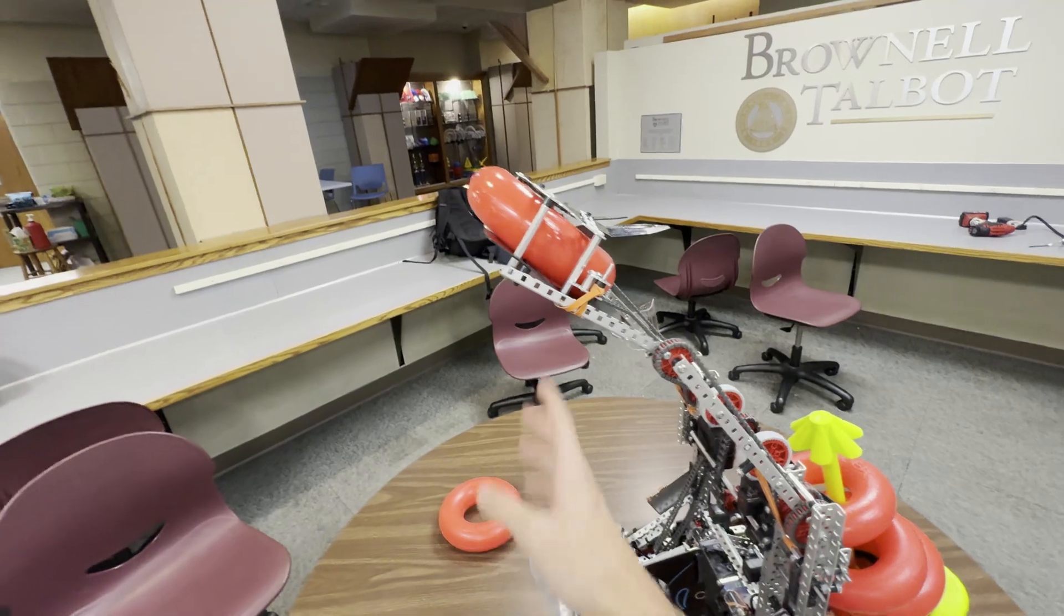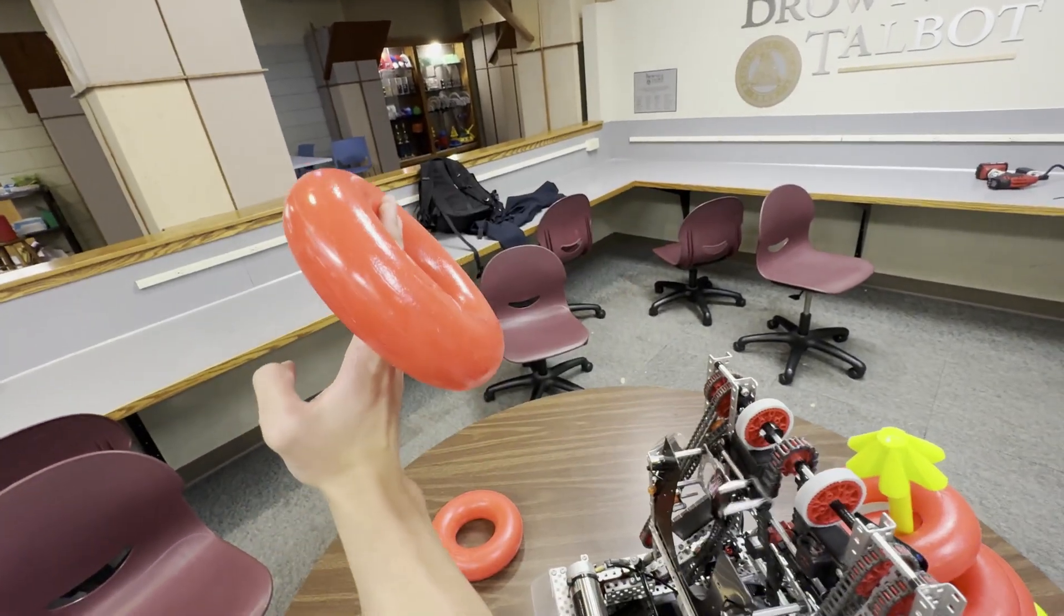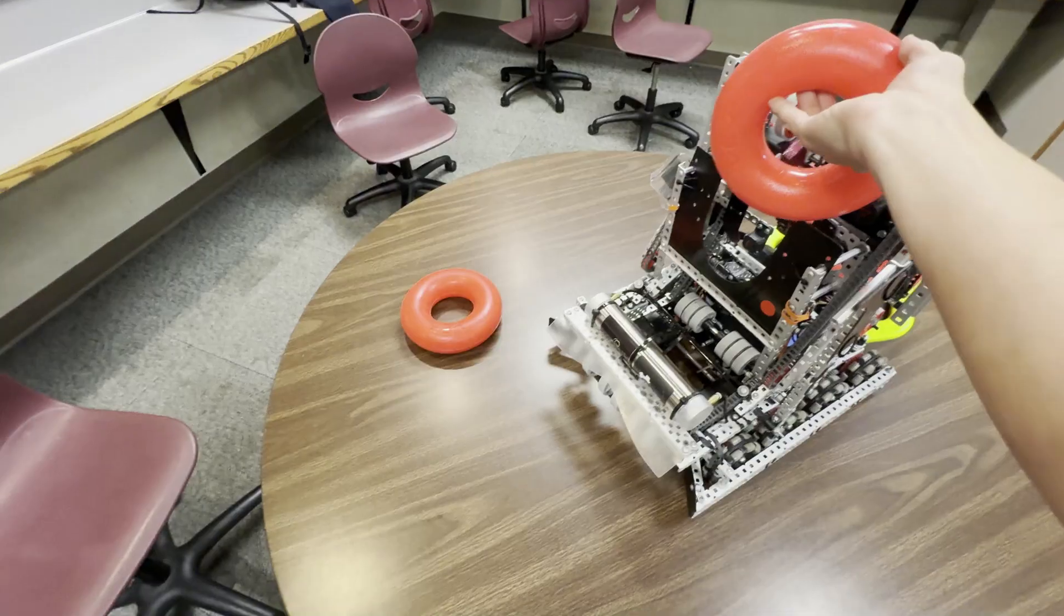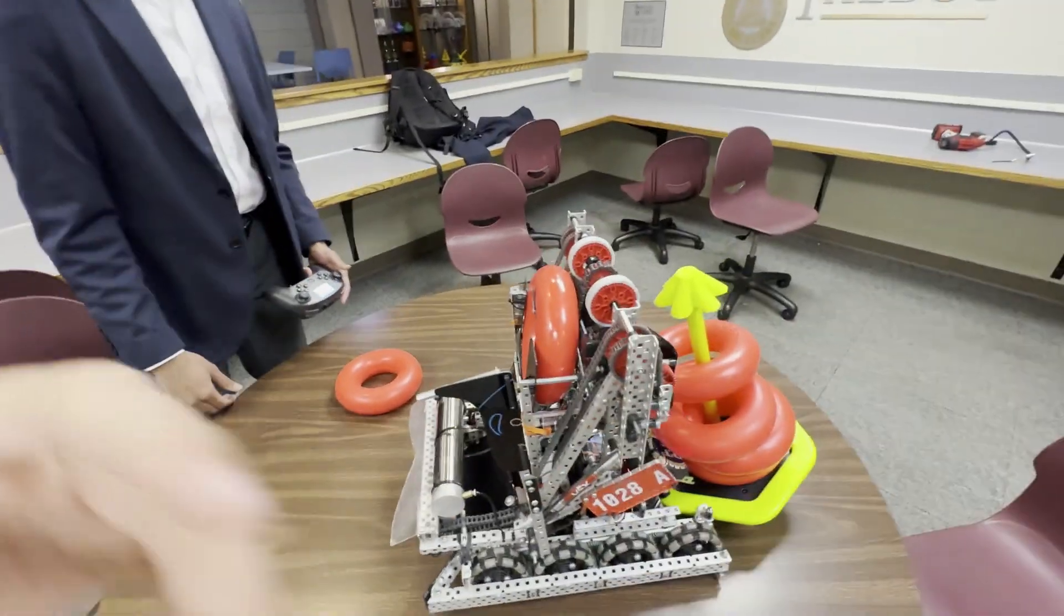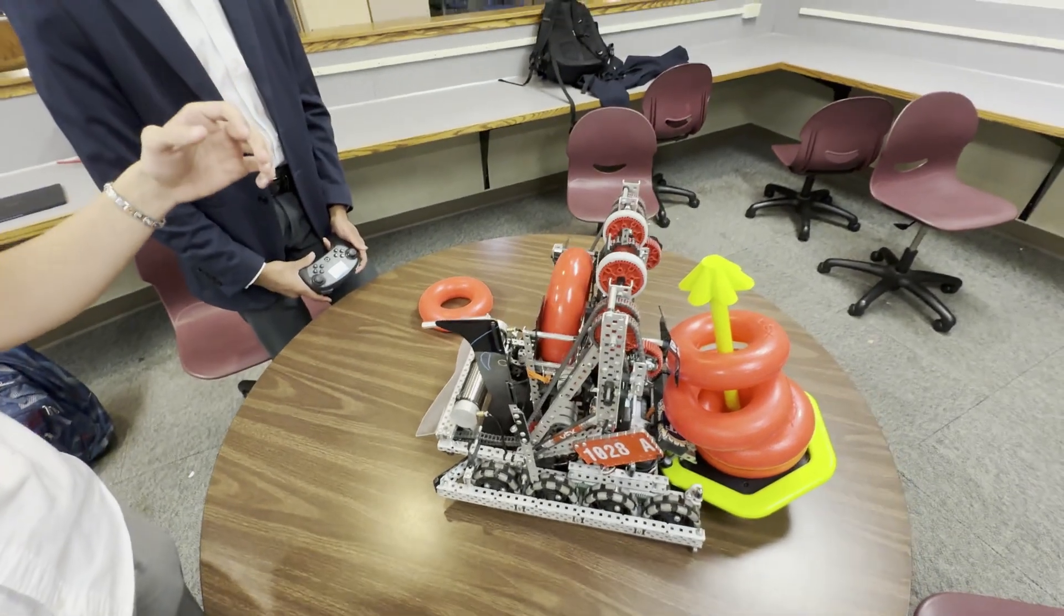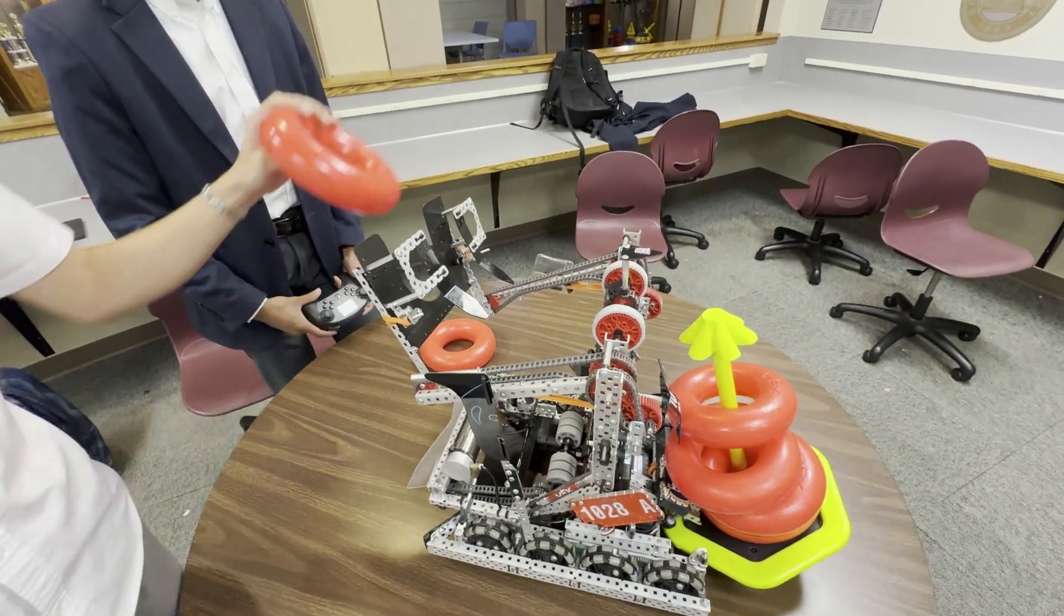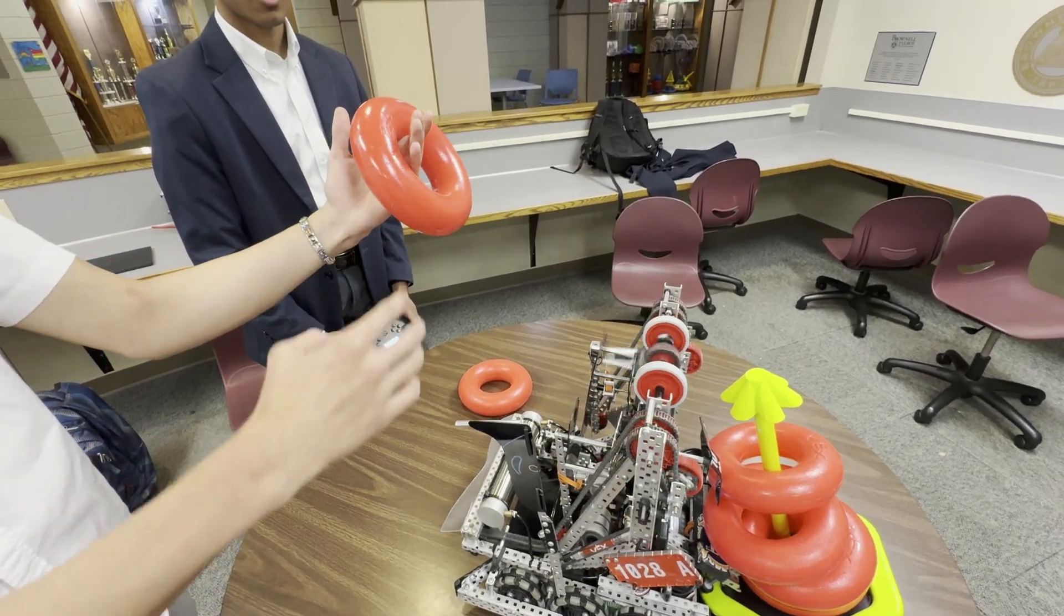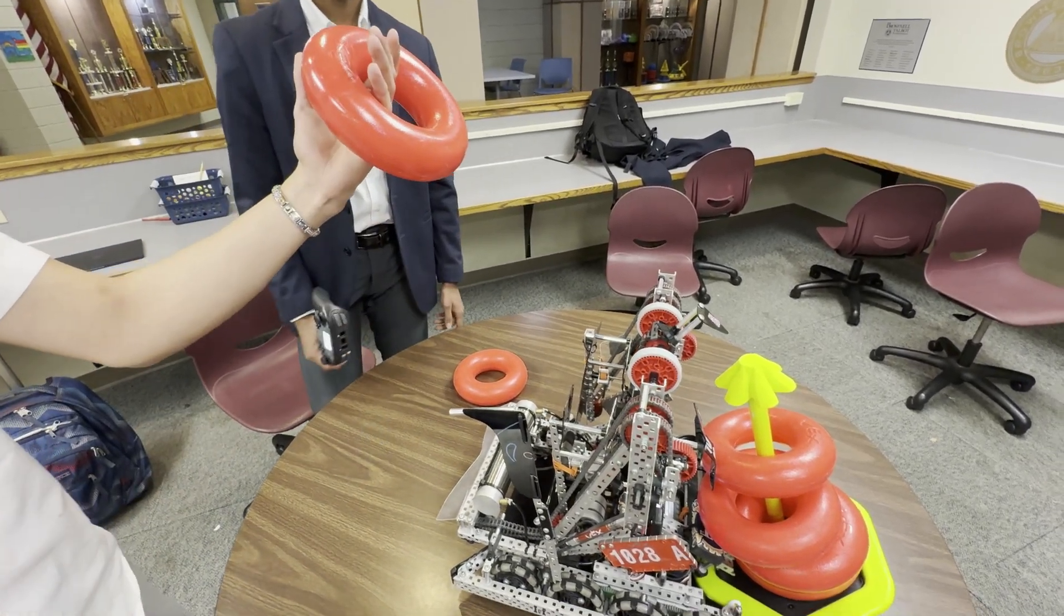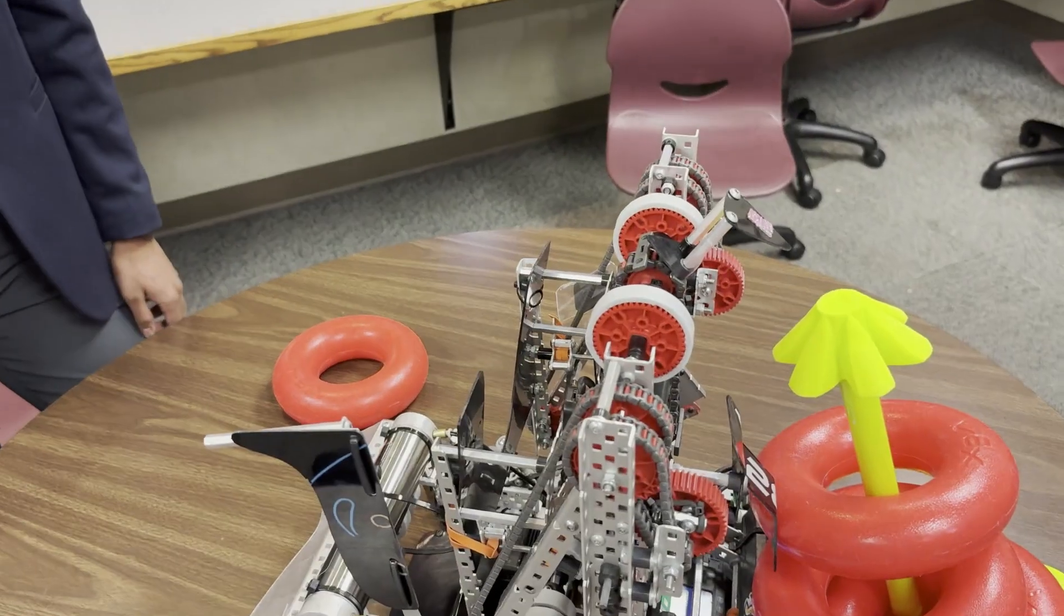And then you can see for the scoring motion, if he puts the arms down... You can see the way that it pulls the arms down is really good for scoring because as it goes down, it actually comes back into the robot, so it slides it out very easily.